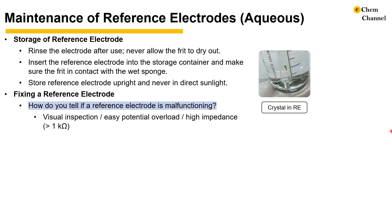The last topic we would like to cover is dealing with malfunctioning reference electrodes. When an electrode malfunctions, it may lead to easy potential overload. You can inspect the reference electrode visually to see whether there is a color change or crystal growth near the frit. In the figure on the right, you can see a large salt crystal grown on top of the frit, blocking it completely.